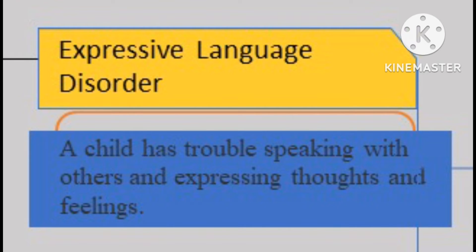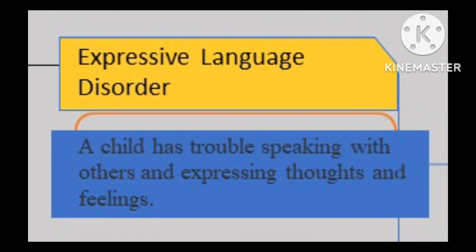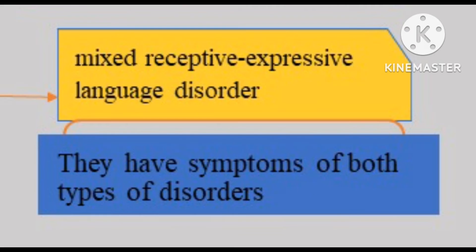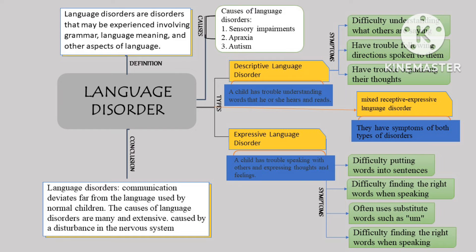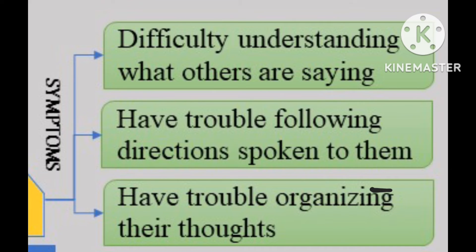However, a child with expressive language disorder may have the normal language skills needed to understand verbal or written communication. Some children have a mixed receptive-expressive language disorder in which they have symptoms of both types. A child with a language disorder has one or more symptoms that can range from mild to severe. Children with receptive language disorders have difficulty understanding what others are saying, trouble following directions spoken to them, and trouble organizing their thoughts.